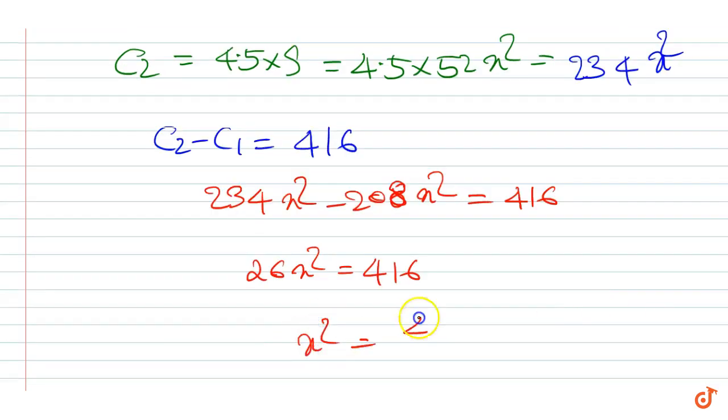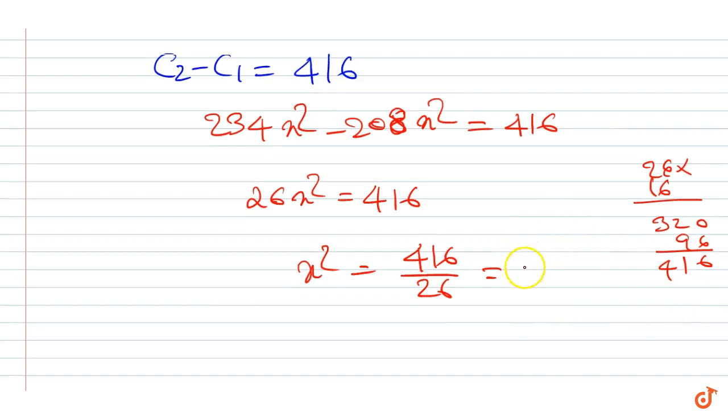That is, x² equals 416 divided by 26. Verifying: 26 times 16 equals 320 plus 96 equals 416, so x² equals 16. Therefore, x equals 4 meters.